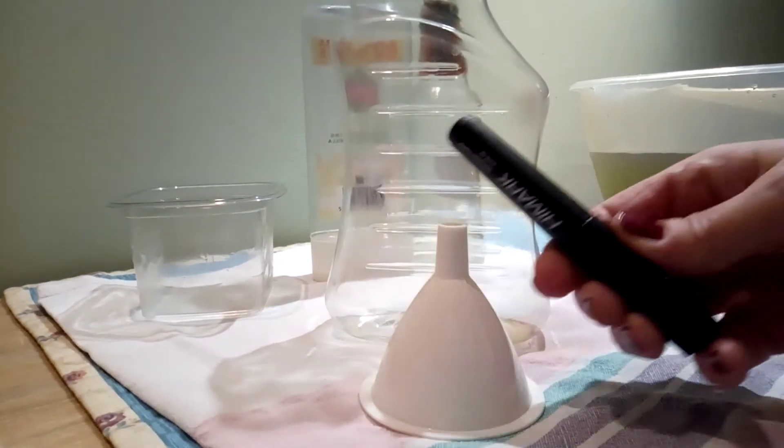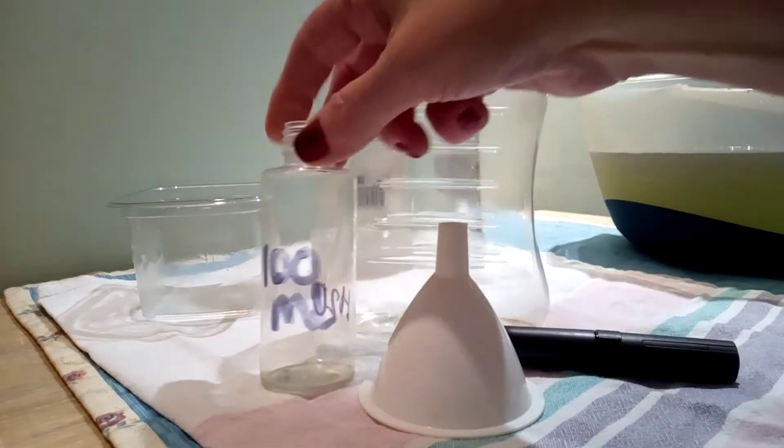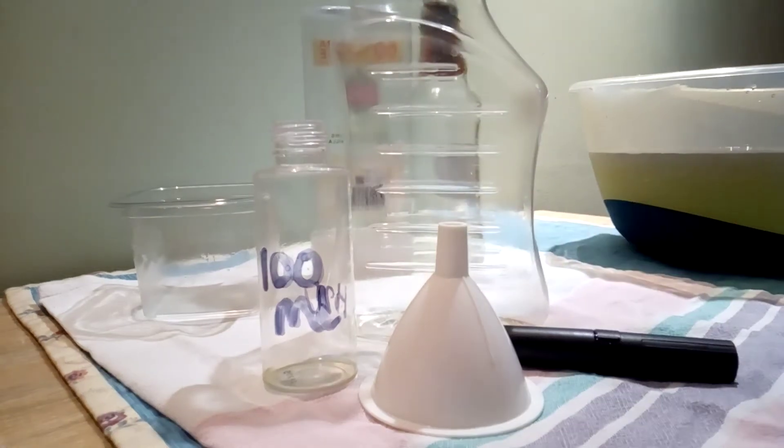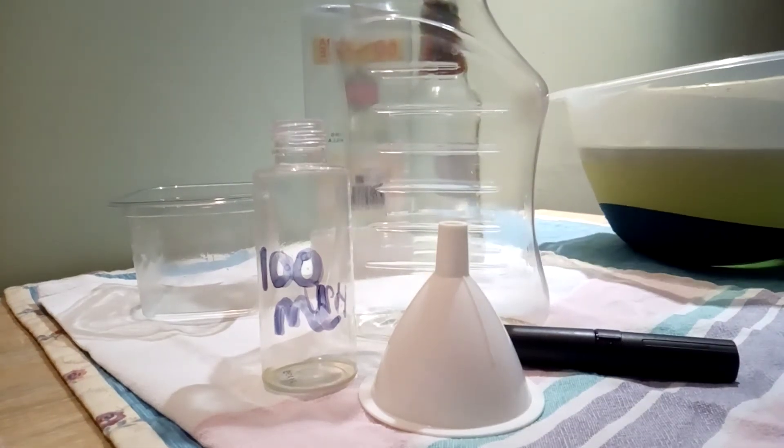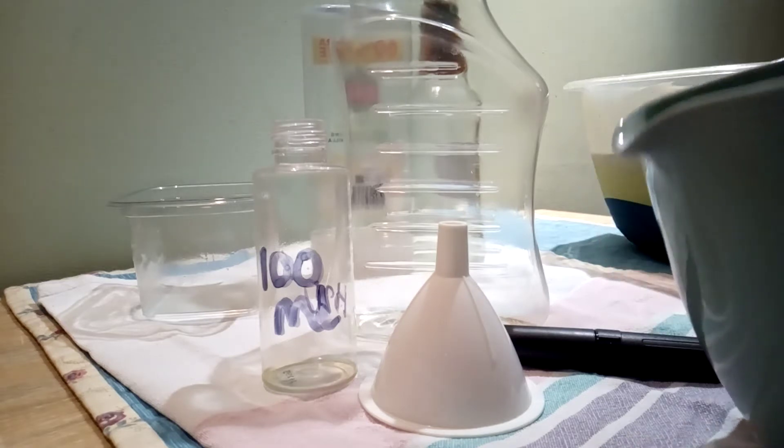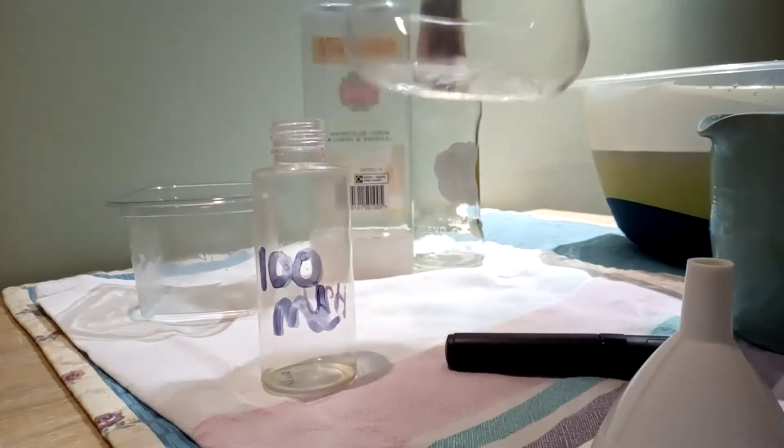I'm going to use a funnel, marker pen, a 100 milliliter bottle - I didn't have a beaker at home - and some water. It's just colored water so that you can see it in the bottle. And here's a smaller jug because it's easier for me to pour out.